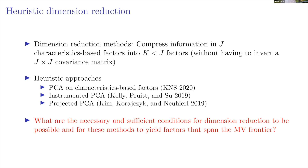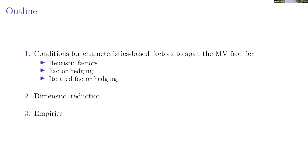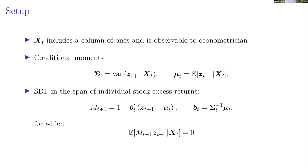That's roughly what we discuss in the paper. The outline covers conditions for heuristic factors, factor hedging, and then dimensionality reduction. Let me start with the setup. X is our characteristics matrix, and sigma-t is the conditional covariance matrix of returns.